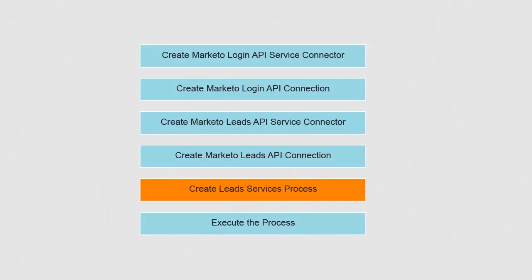Now we have two disjoint Marketo service connectors. One of them gives access token as output, whereas the other expects access token as input. We will need to weave these two connectors into a single unit so that the user can perform coding paradigms like decision-making and parallel path execution. We will do this using a process and call this the Marketo API business process.